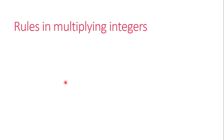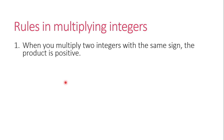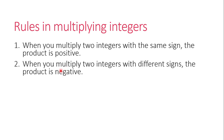So now, what do you think are the rules in multiplying integers? When we multiply two integers with the same sign, the product is always positive — either both positive or both negative. As long as they have the same sign, the product is positive. Second, when we multiply two integers with different signs, the product is always negative. So multiplying a negative by a positive number or a positive by a negative number, the product is always negative.